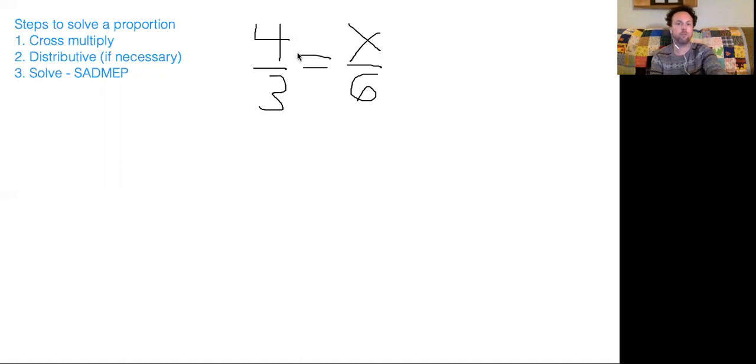So the first step to solve a proportion is to cross multiply. Now this only works if you have fractions on either side of an equal sign. If I had x over 6 times 3 halves, when you multiply fractions, you actually multiply straight across. So I would actually multiply x times 3 and 6 times 2, giving me 3x over 12. But when we're solving a proportion, which is two fractions that are separated by an equal sign, we're actually going to cross multiply, meaning I'm going to multiply the numerator and the denominator of the opposite sides of the fractions. So I have 4 times 6 and 3 times x.